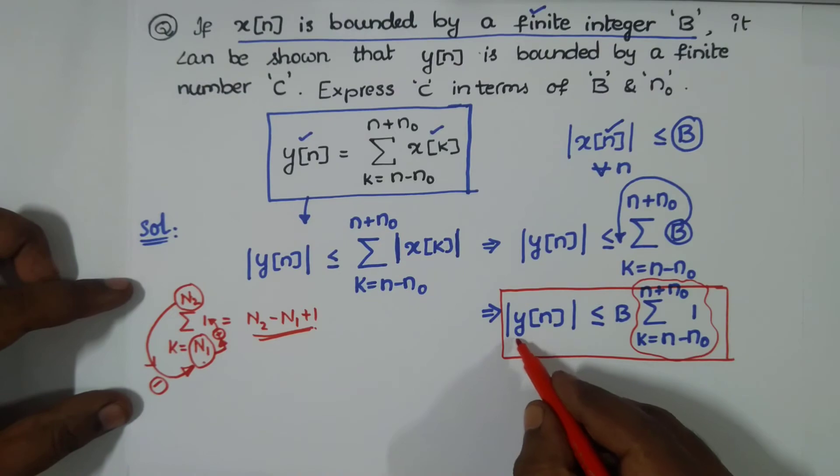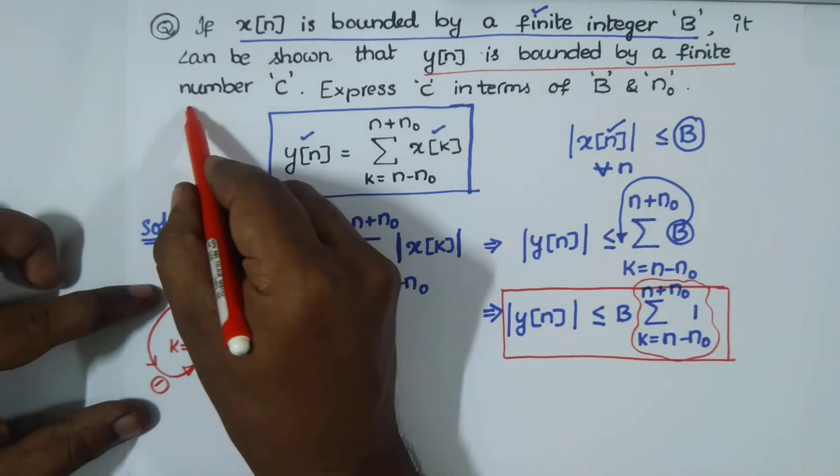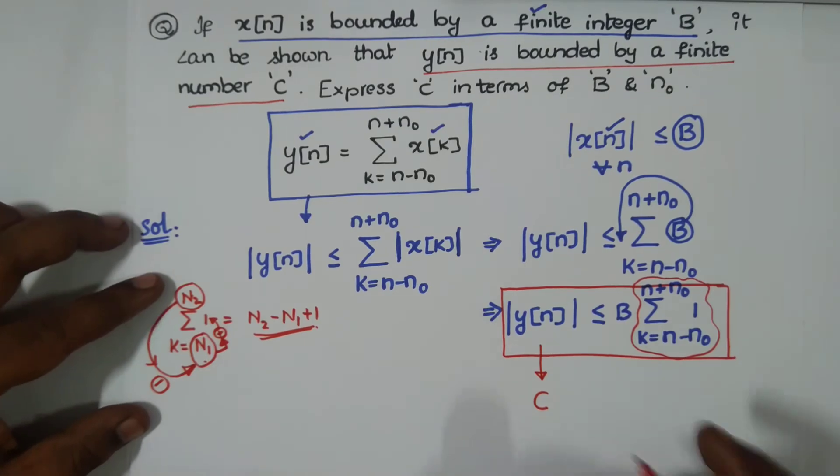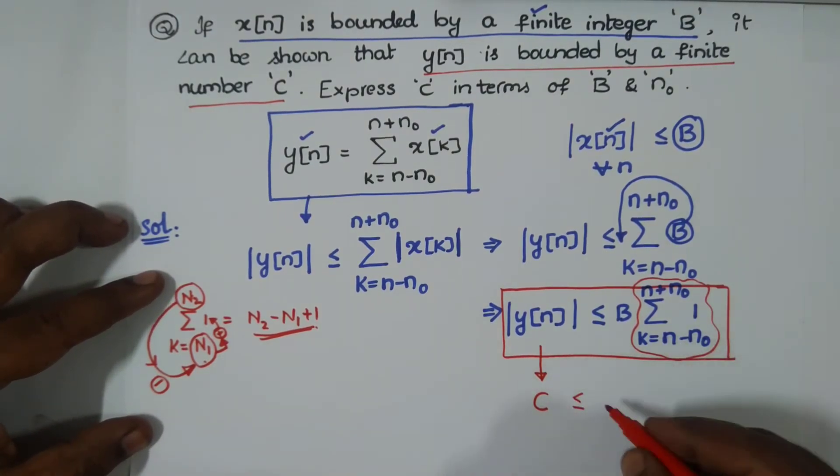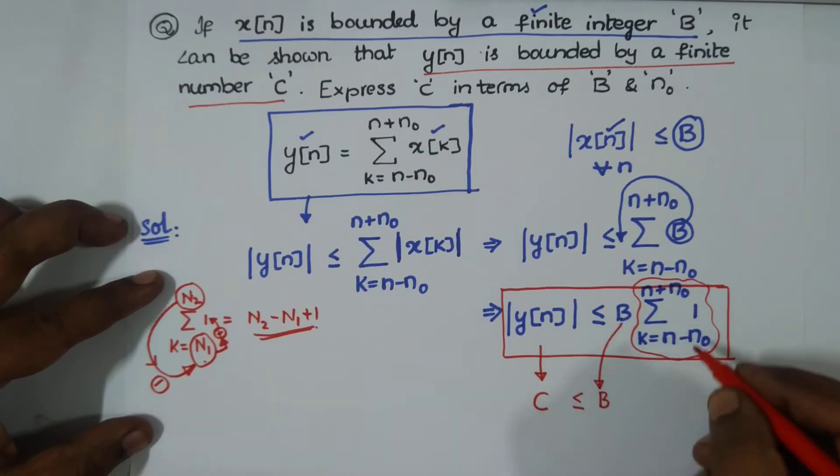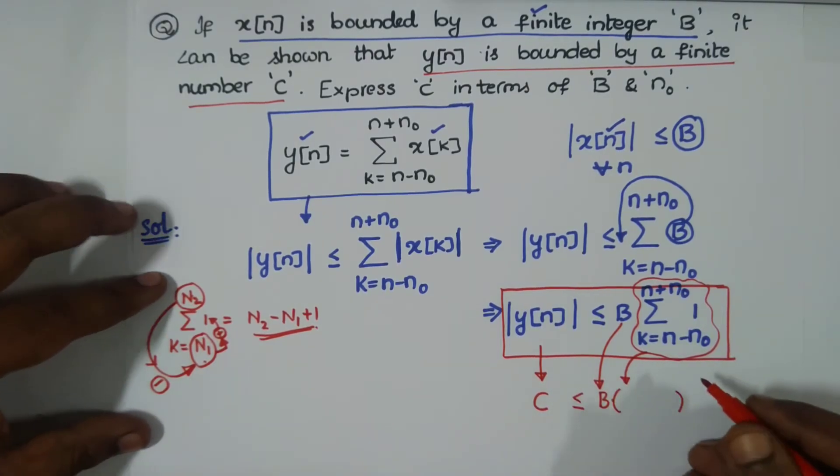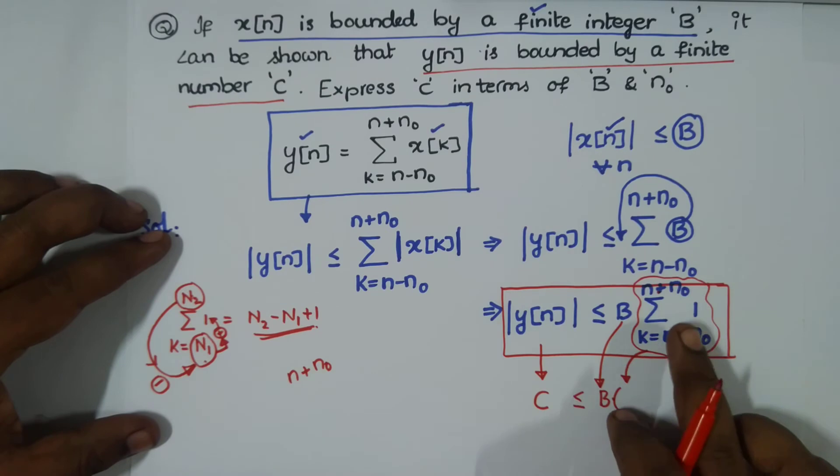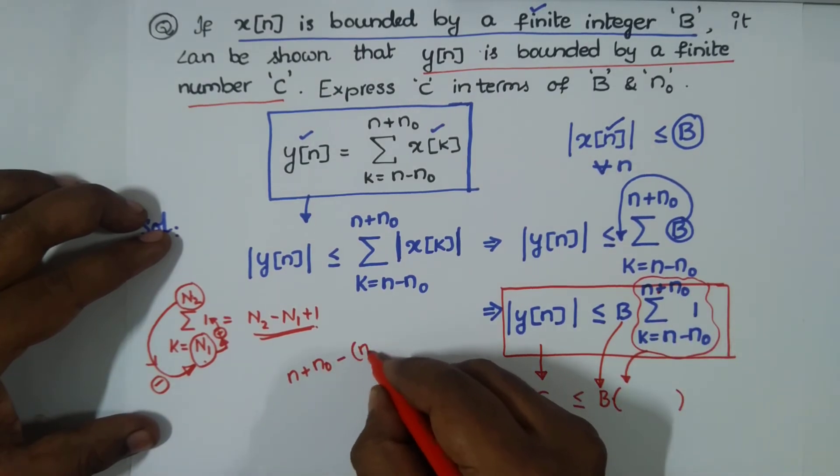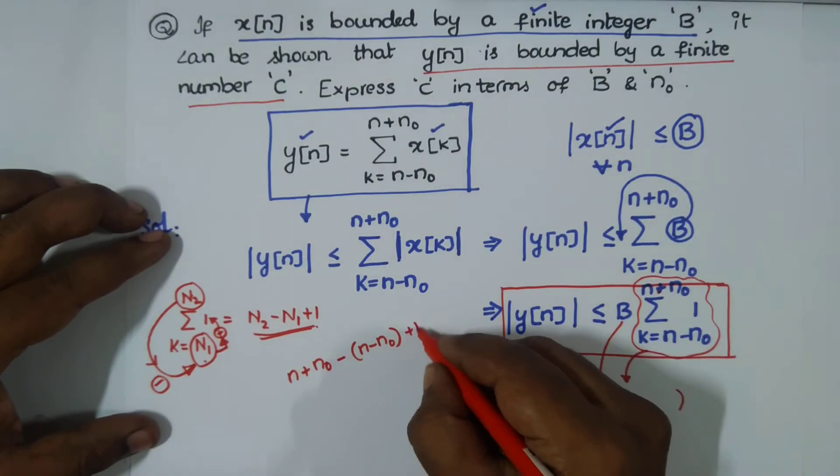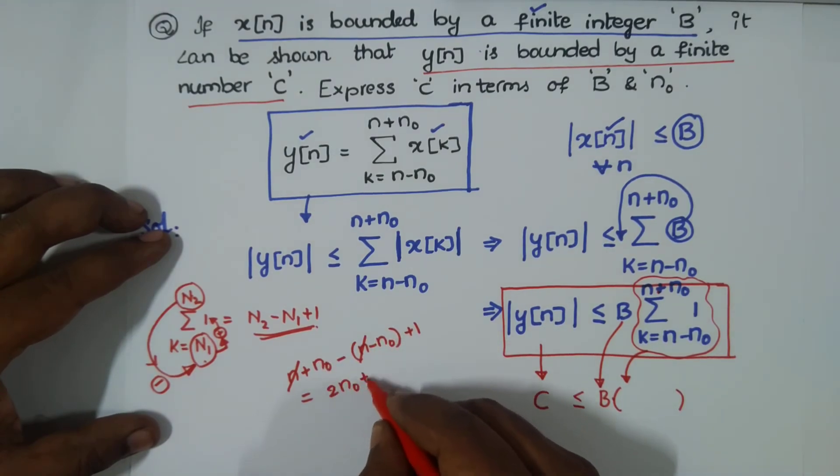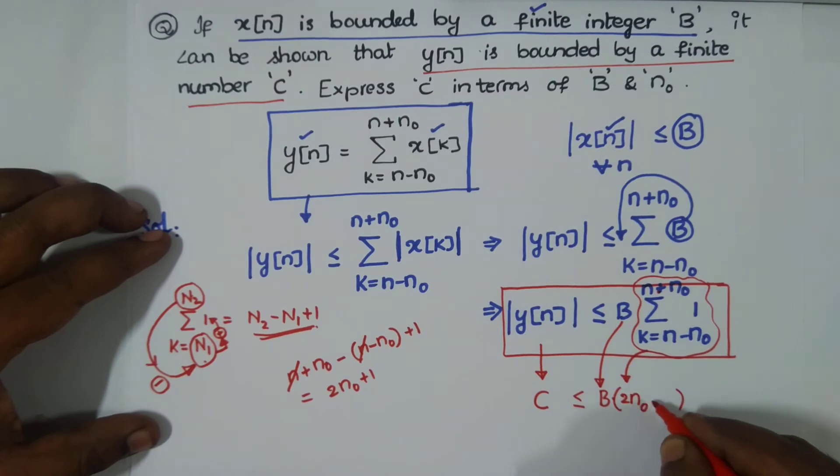|y[n]| is bounded by a finite number C. So this absolute value is bounded by C. C is less than or equal to B times this quantity. Upper limit minus lower limit: n plus n₀ is my upper limit, n minus n₀ is lower limit, plus one. Simple technique. So n cancels out, giving 2n₀ plus 1. Finally, we have C ≤ B(2n₀ + 1).